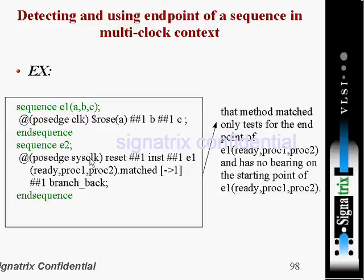Here we are using system clock, and there you are using a different clock. The timing would look like: first that stripe, then an arrow mark, after one clock cycle delay we are expecting branch back. This is all about the two sequences.